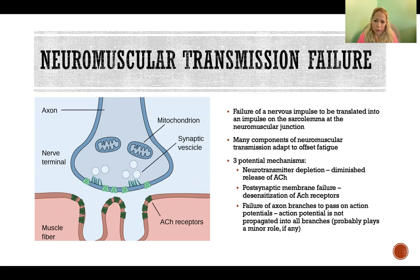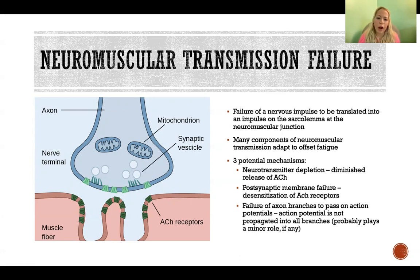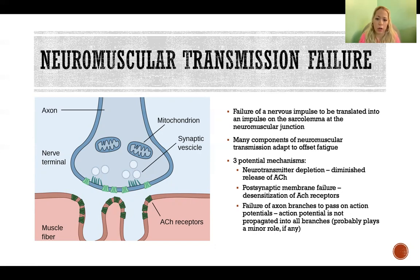There are many components of neuromuscular transmission that adapt to offset fatigue. It's not totally clear how or whether neuromuscular transmission actually fails, but there are three potential mechanisms hypothesized and demonstrated in animal and some human studies. One potential mechanism is depletion of the neurotransmitter — in the case of the neuromuscular junction, that's acetylcholine. After many impulses have been transmitted over time, acetylcholine becomes depleted, leaving less ability to transmit the impulse from neuron to muscle fiber.